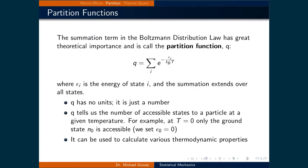The sum term in the Boltzmann distribution law has great theoretical importance and is called the partition function, or q. It is defined as the sum over i of the exponent of negative ei divided by the Boltzmann constant times the temperature, where ei is the energy of state i and the summation extends over all states. One thing to keep in mind is that q has no units — it's just a number.